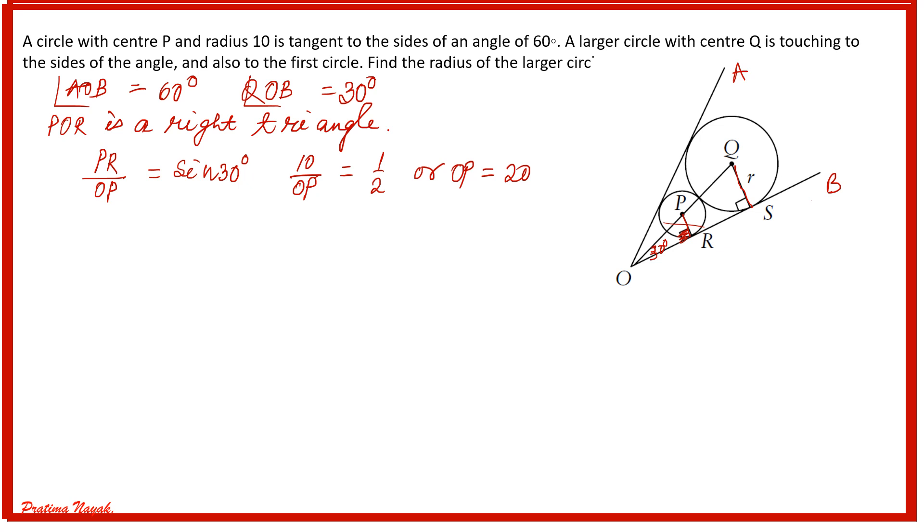Now this point I am naming as R. So what is the length of OR? OR equals OP plus PR. OP is 20 plus PR is 10, that is the radius also. It will be 30. OR is 30.